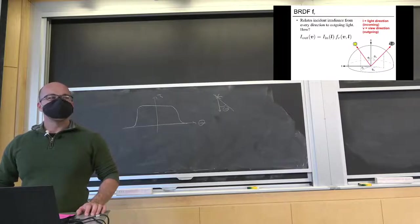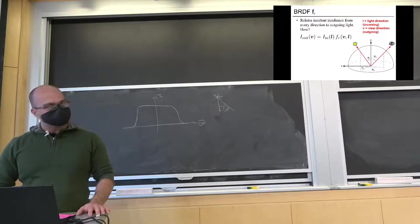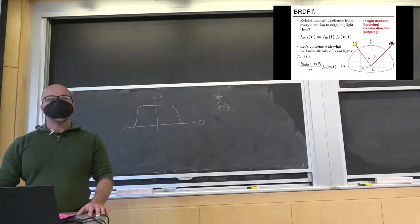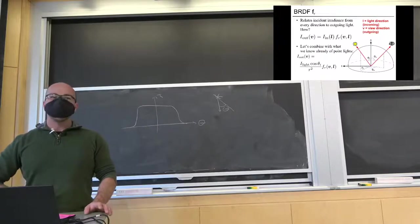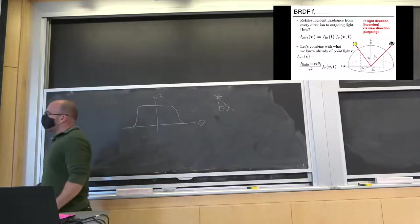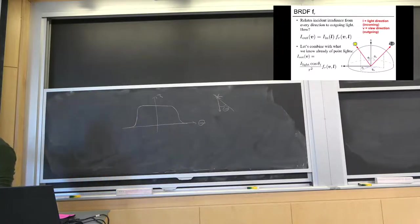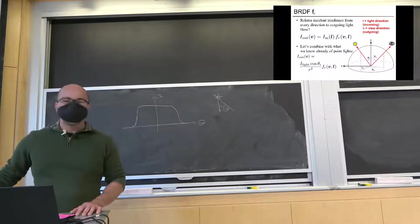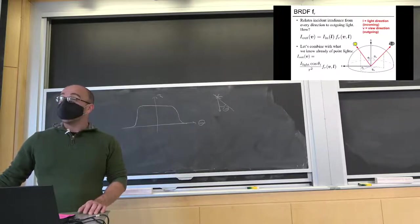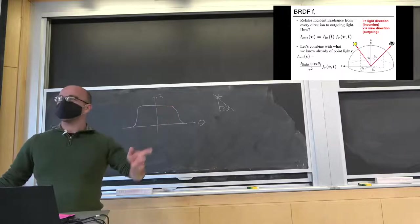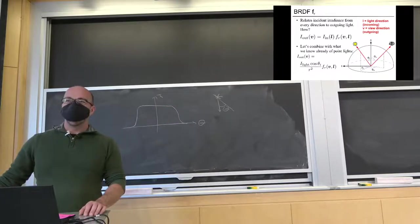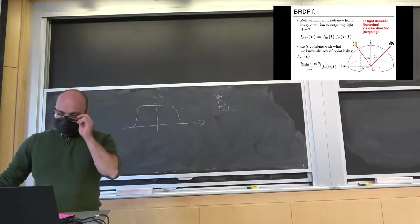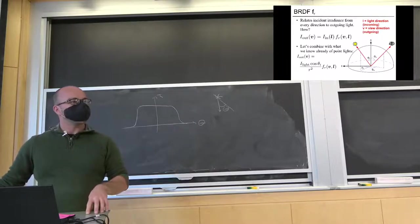The BRDF leads to a pretty simple rendering formula. The amount of light coming out equals the amount of light coming in multiplied by the BRDF. In some sense this is the definition of the BRDF: if you divided both sides by the incoming light, the ratio is a function of V and L. So when doing shading in our ray tracer: intersect a surface, send a shadow ray to the light, compute attenuation as intensity times cosine over r squared, then multiply by the BRDF — that's the amount of light that goes back to the camera.